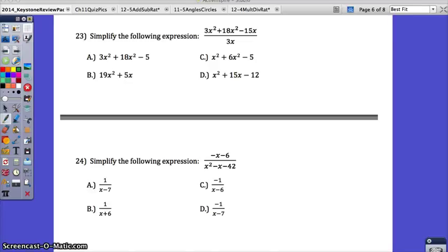This video is going to go over numbers 23 to 25 on your Algebra 1 Keystone Review Packet. Number 23: Simplify the following expression. Both 23 and 24 really come from Chapter 12, Section 3 of the Algebra Holt book.